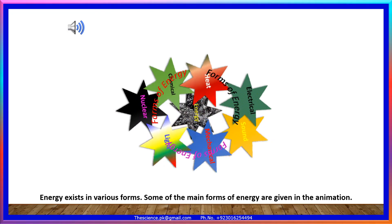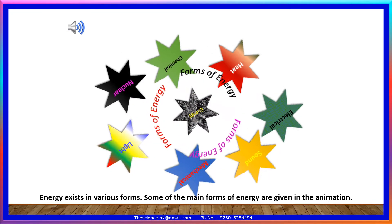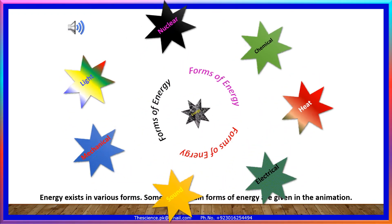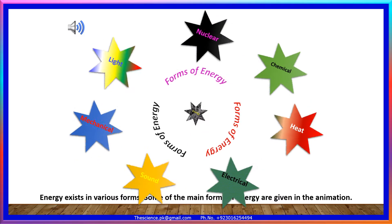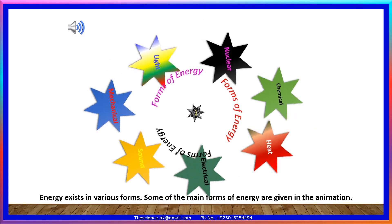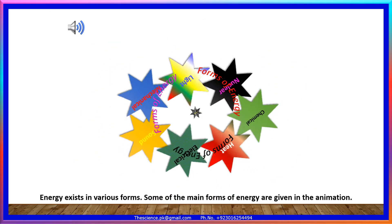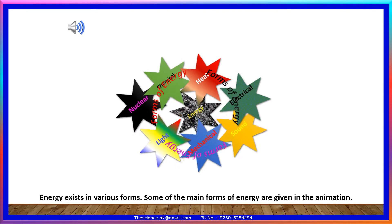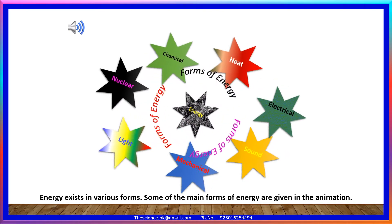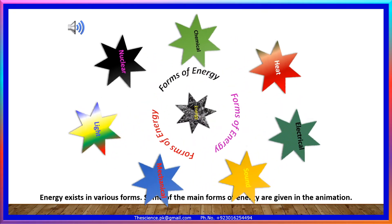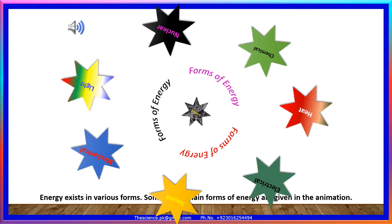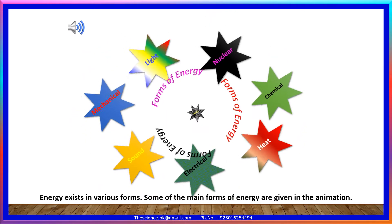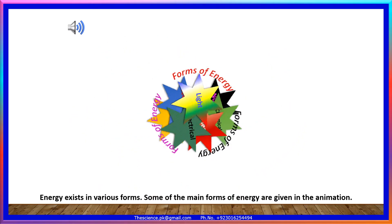Energy exists in various forms. Some of the main forms of energy are given in the animation. The different forms of energy are: heat energy, electrical energy, sound energy, mechanical energy, light energy, nuclear energy, and chemical energy.